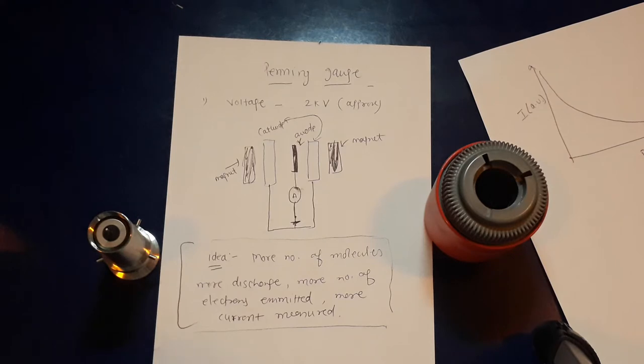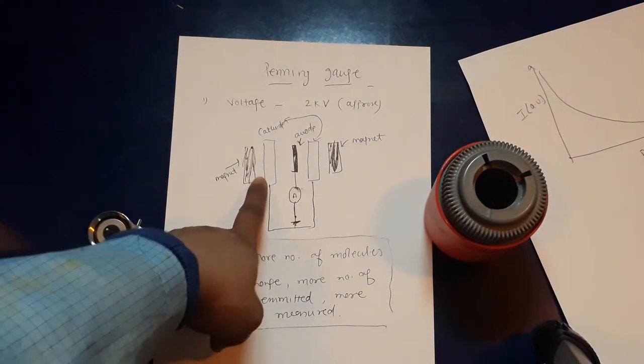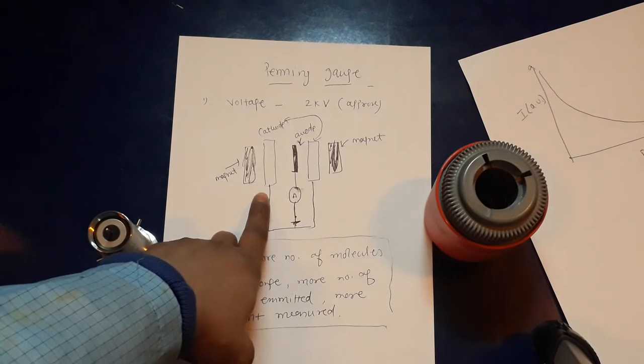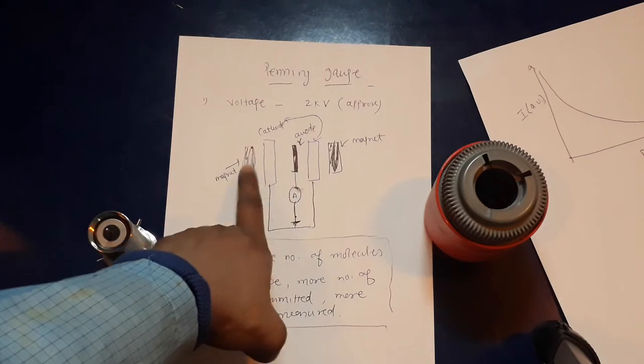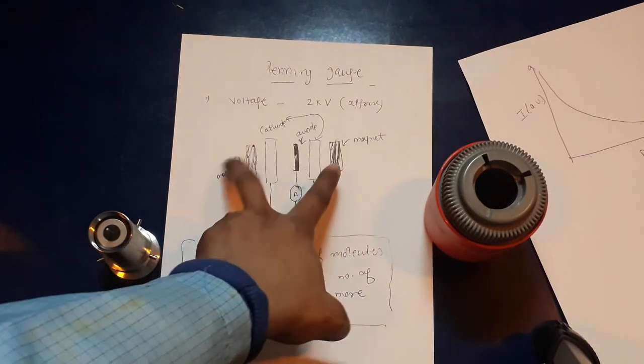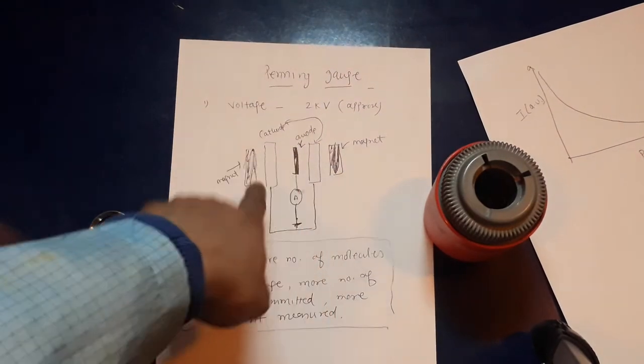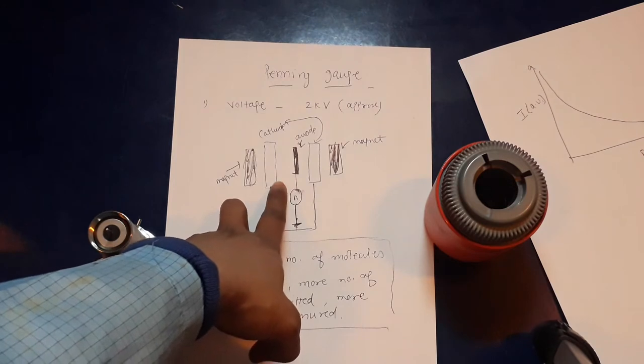What is happening here is there is a cathode where you apply very, very high voltage and there is an anode. These pieces are inside a permanent magnet. So when you apply a very high voltage, there will be some gas molecules and the discharge will happen.